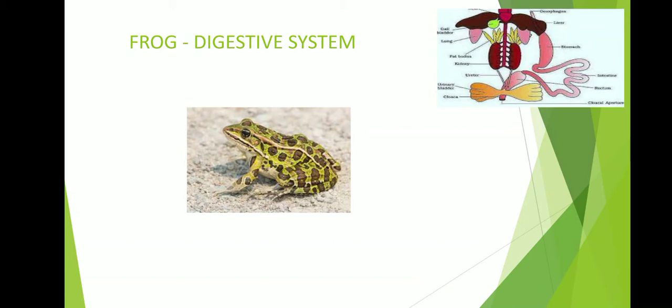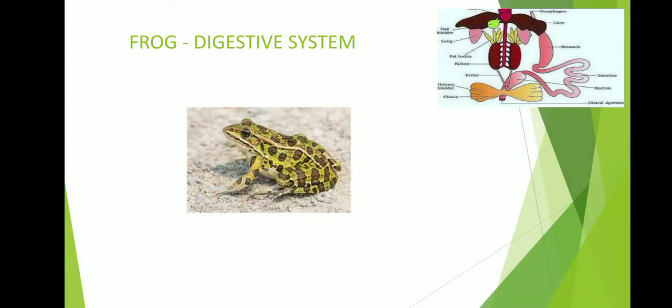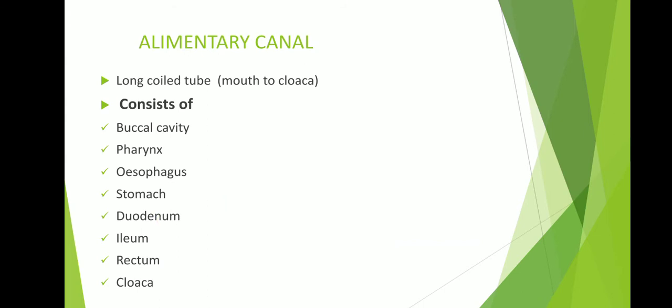Hi students, now we are going to learn about the digestive system of frog. In frog, the digestive system includes alimentary canal and associated digestive glands. It is an organ system because it contains more than one organ. In this session, we will discuss about the alimentary canal of frog.